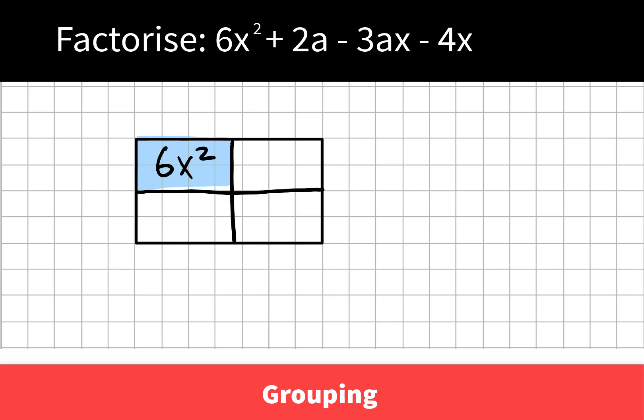We use the quadratic grid and place the 6x squared into the first position. In the opposite corner of the grid, we place the term that is least like the 6x squared, the one that doesn't have common factors. The term least like 6x squared is the 2a term.